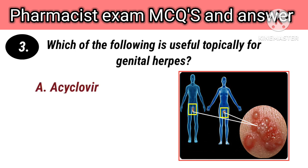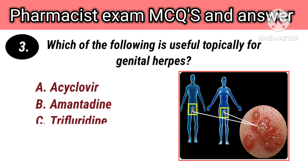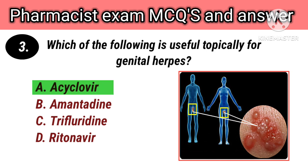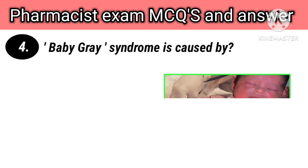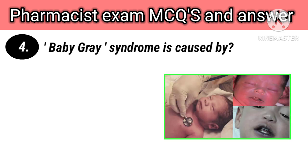Which of the following is useful topically for genital herpes infection? Options: A. Aciclovir, B. Amantadine, C. Trifluridine, D. Ritonavir. Right answer is A. Aciclovir.